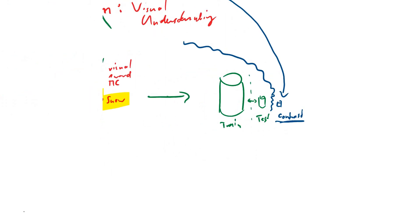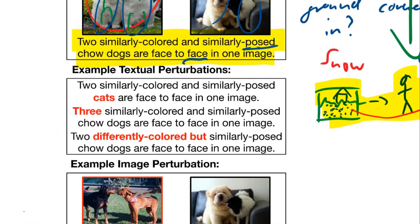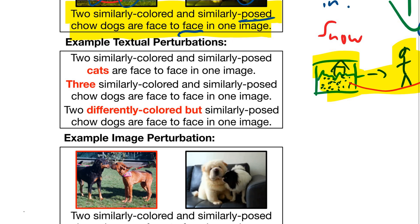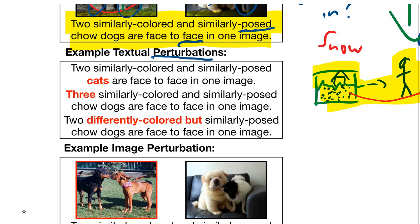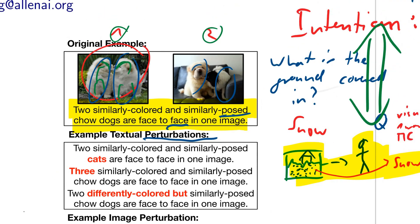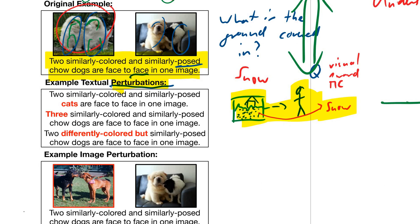They capture this here in their example. So if we go back to the example, here are things and they suggest to do this via perturbations. So what they would do is they would start at this example up here, they would start and they would perturb it textually or via image. So they would perturb it to make it change the label, the gold label.